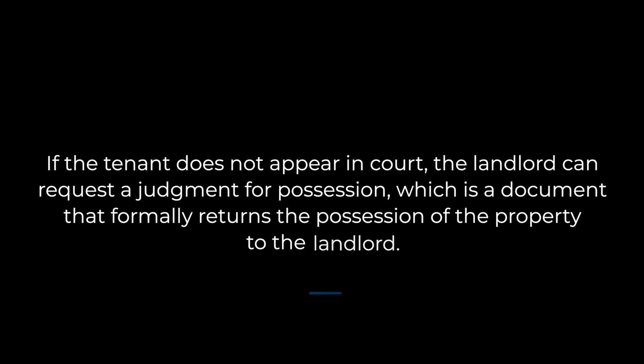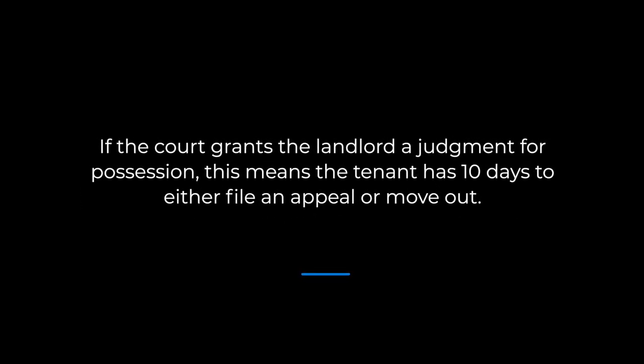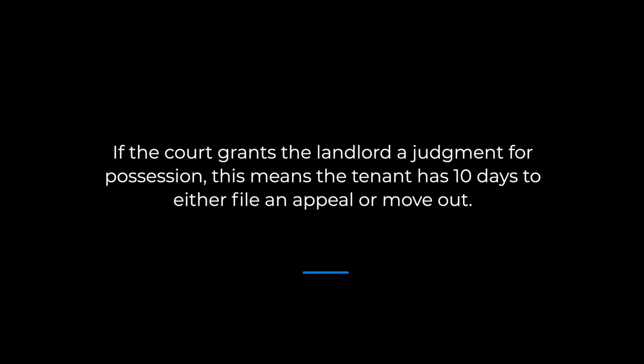If the tenant does not appear in court, the landlord can request a judgment for possession, which is a document that formally returns the possession of the property to the landlord. Tenants that dispute the grounds for eviction can provide their side of the story in court. The magistrate hears the evidence and rules in favour of either the landlord or the tenant — this is known as a trial by magistrate. If the court grants the landlord a judgment for possession, the tenant has 10 days to either file an appeal or move out. If the tenant refuses to move out, the landlord may apply for a writ of possession, which authorizes the sheriff to remove the tenant and the tenant's possessions from the property.